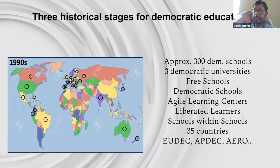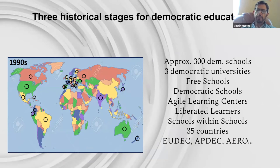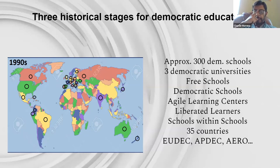Then in the 1990s, we already have a truly globalized movement. There are around 300 democratic schools worldwide, at least three democratic universities — it's an umbrella concept. There are free schools, democratic schools, agile learning centers, liberal learners, schools within schools, and this is happening in over 35 countries. We already have regional organizations which are very active: EUDEC, APDEC, IRO — which is happening next week, by the way, and everybody's invited. People are getting together and building on these networks.